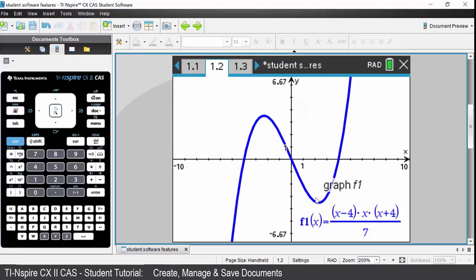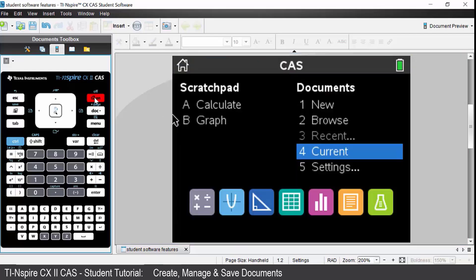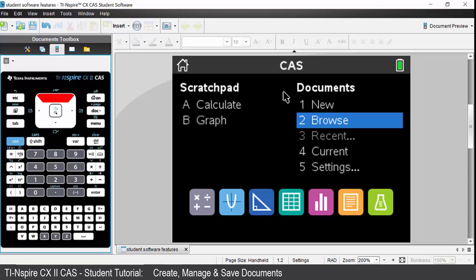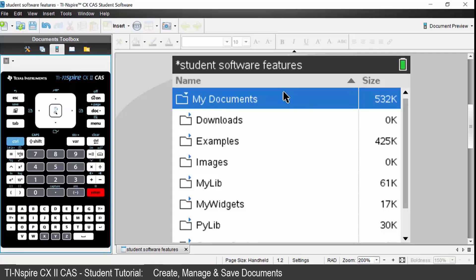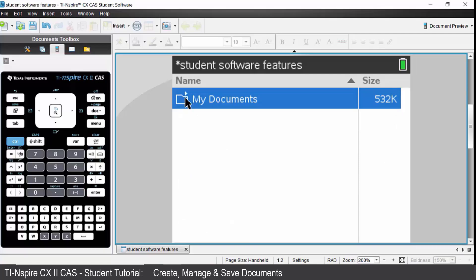The next thing you may want to do is create and delete folders directly on your handheld. On your handheld, press the home key. Under the documents side of your screen, come down to option 2 which is browse. This lets you browse the folders on your handheld. Everything will be located under my documents. To open and close that folder, simply click on it to open it and then click on it again to close it.